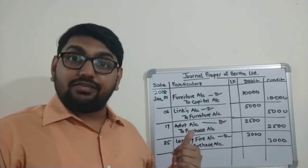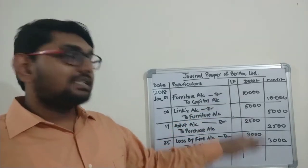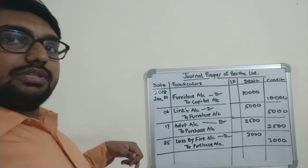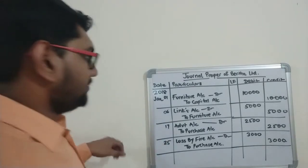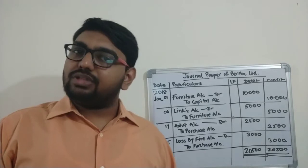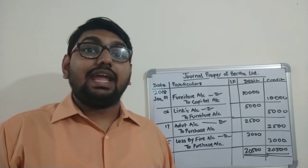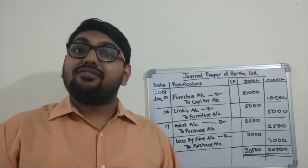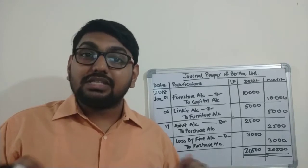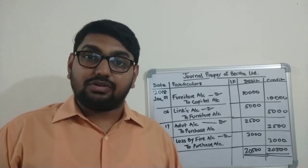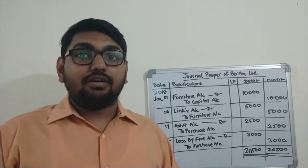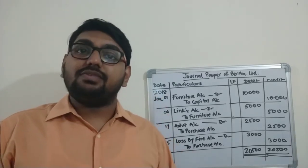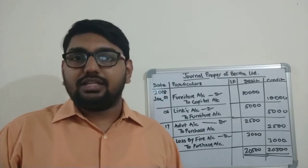With that we have come to the end of the sum. The total comes to rupees 20,500. We have come to the end of the chapter journal proper and also the end of the series on subsidiary books.